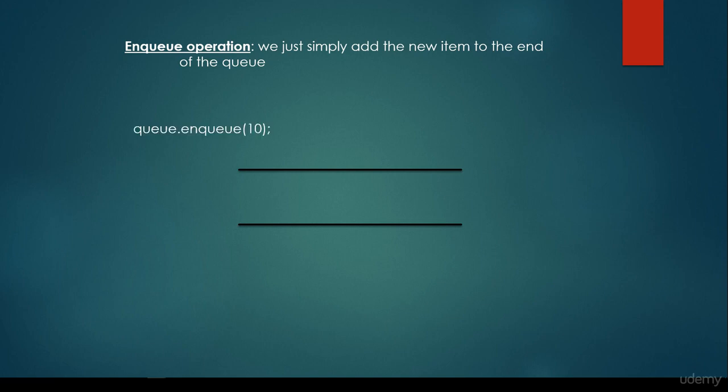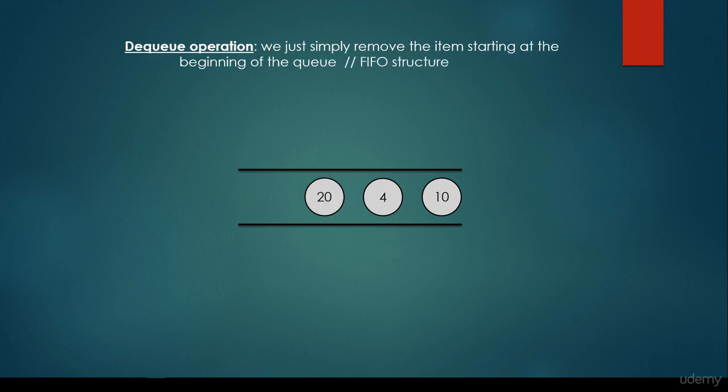So we would like to enqueue the integer 10, so basically we just add it to the queue. We would like to enqueue 4, we just add it to the end of the queue. We would like to enqueue the 20, we just add it to the queue, and so on.